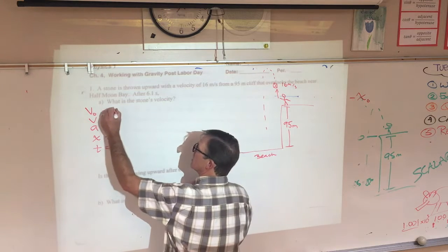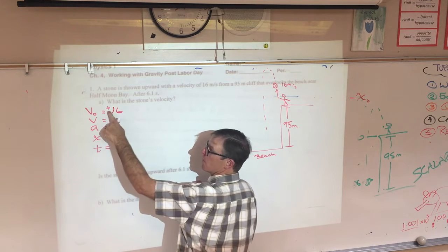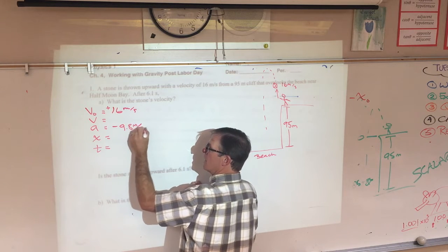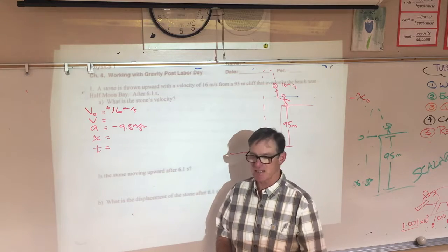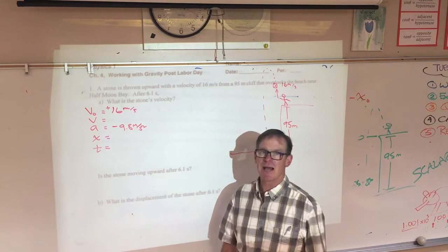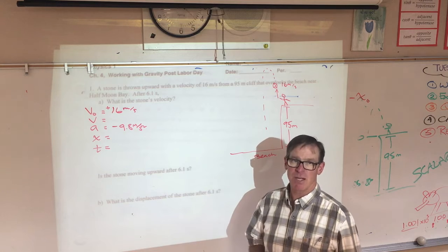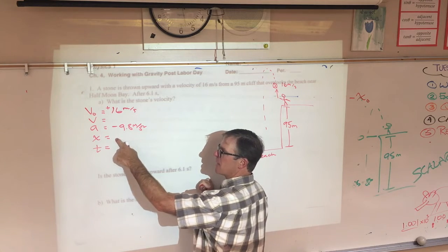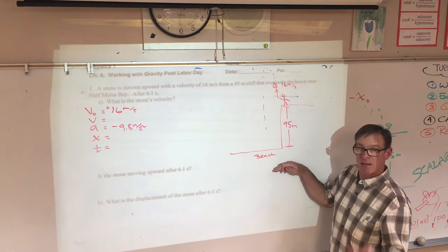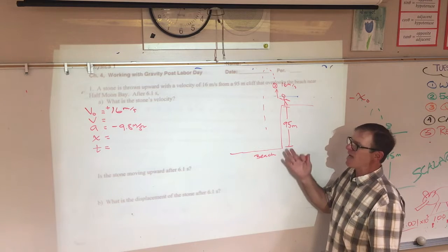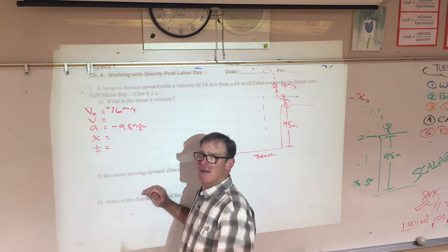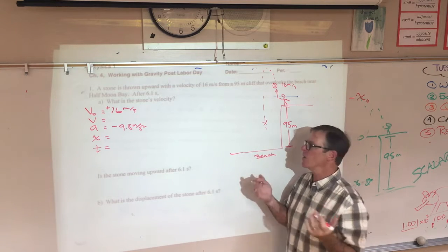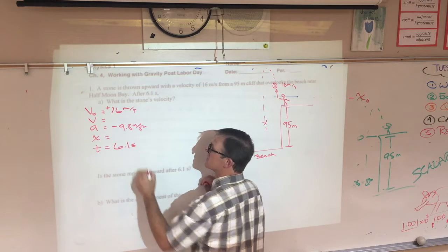After pausing the video and making your list, hopefully you realize that the ball was going upward positive 16 meters per second. If you remember from last week, whenever an object is undergoing free fall, that is to say the only force acting on it is the force of gravity, then negative 9.8 meters per second squared is our acceleration due to gravity. You might be tempted to say the displacement is 95 or even negative 95, which would be better, but in fact we don't know if the ball is going to travel all the way down to the beach below. Maybe it's somewhere in between. And so look at the next piece of information. Your time is 6.1 seconds.